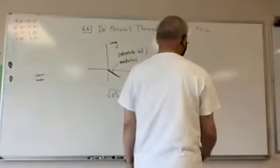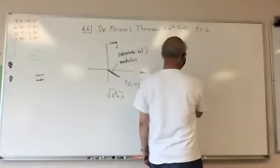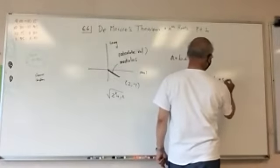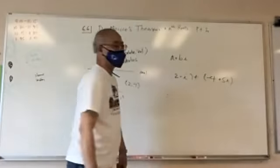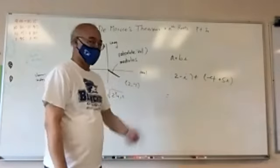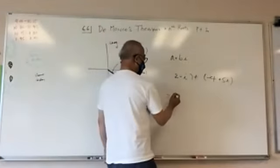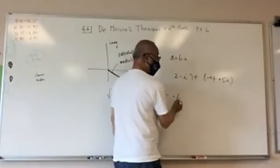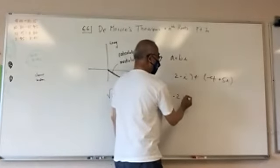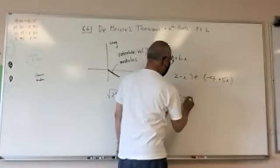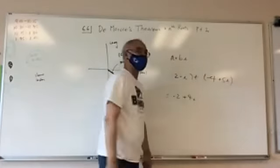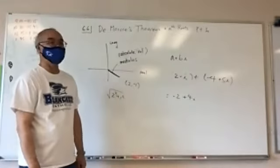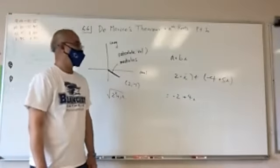Let's do some review. If I had two complex numbers, how would I add them? It would just be two minus four plus five minus i, so you add the i's together and you add the real numbers. Pretty simple.